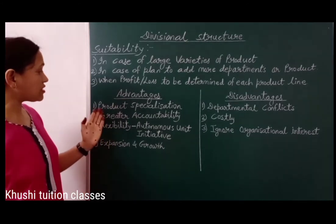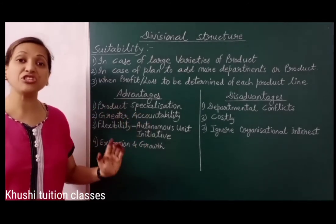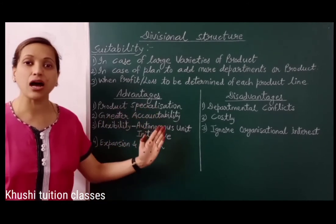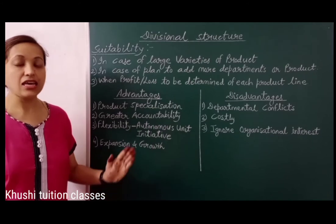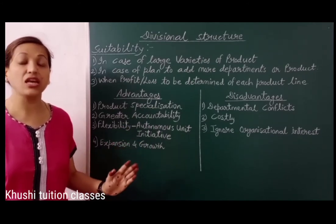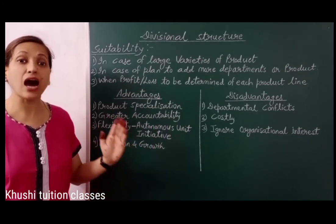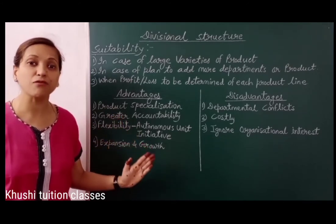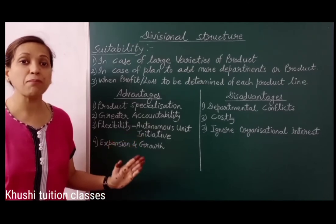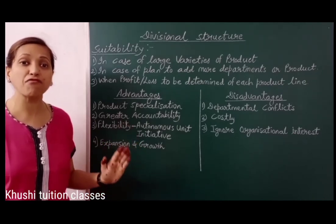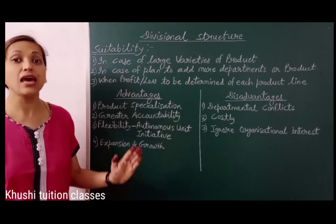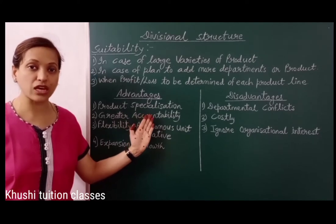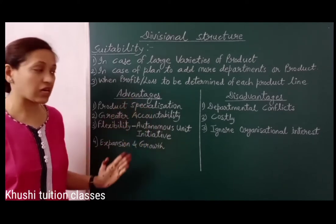Now, advantages. The first is product specialization. Divisional structure follow करने से organization को product specialization का benefit मिलता है. जैसे cosmetic division — इस product से related हर function, उसका concerned manager और उसकी team मिलकर साथ में करते हैं. तो पूरी team members को इस product से related हर function का knowledge होता है, expertise होती है, जिससे इस product के लिए उनका specialization होता है.